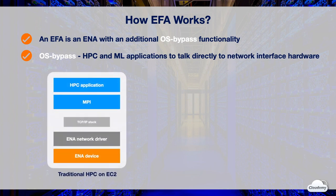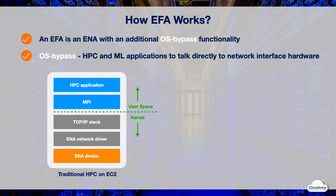Traditionally, HPC applications use Message Passing Interface, or MPI, to interface with the network transport in the user space. HPC applications use the TCP/IP stack and ENA driver in the kernel to enable communication between instances in the HPC cluster. The user space is where all user applications execute. Applications in user space make calls into the kernel to perform privileged operations such as I/O commands to network or storage devices. The kernel is where the operating system and device drivers run. Transitions between user space and kernel require context switching, which can limit application performance.